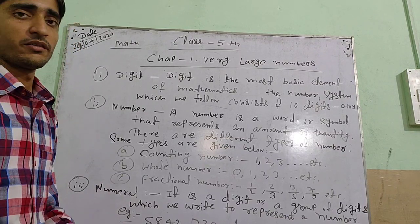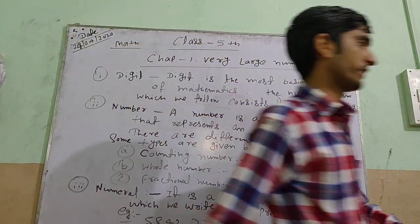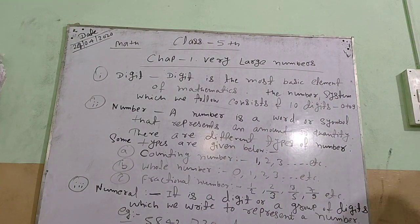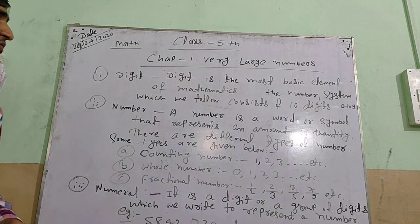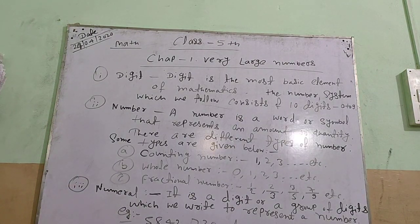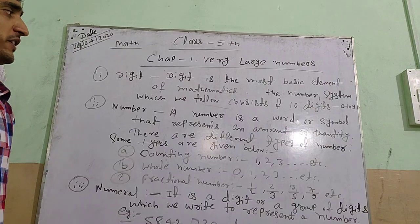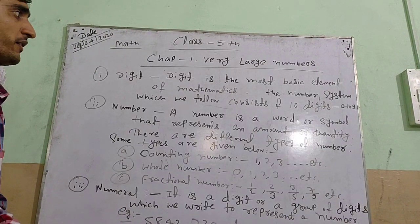First, digitism. Very large numbers, first topic is digitism. Digit is the most basic element of mathematics. The number system which we follow consists of 10 digits. This is digitism.